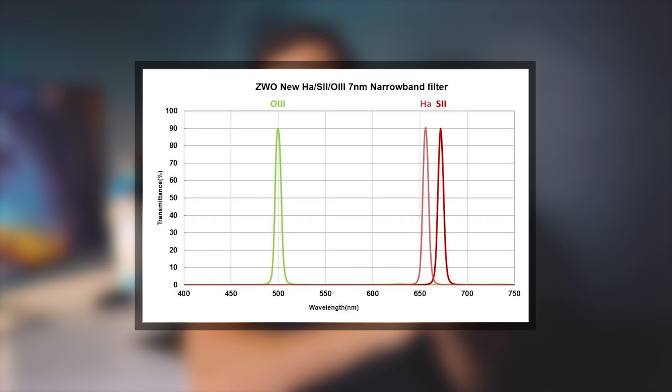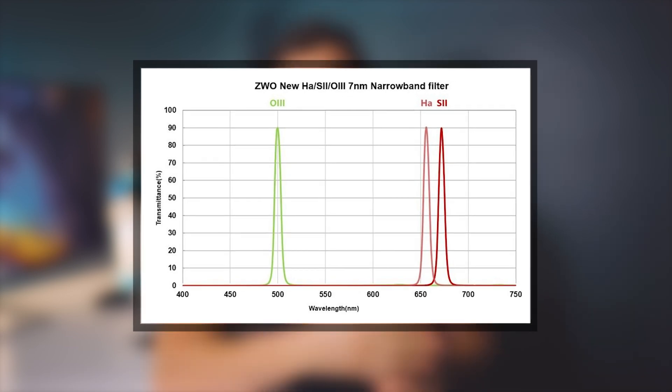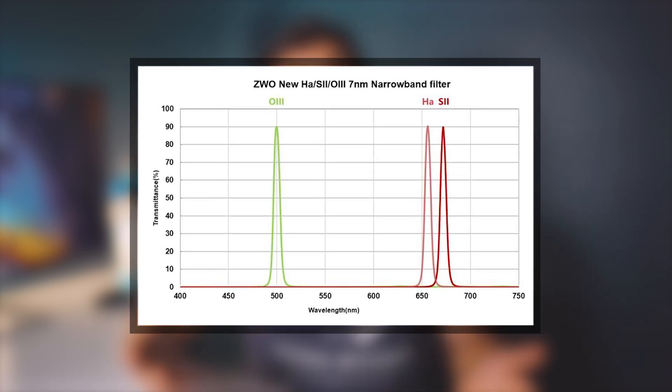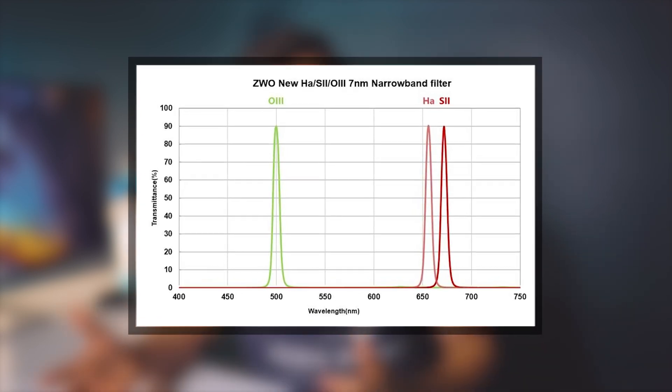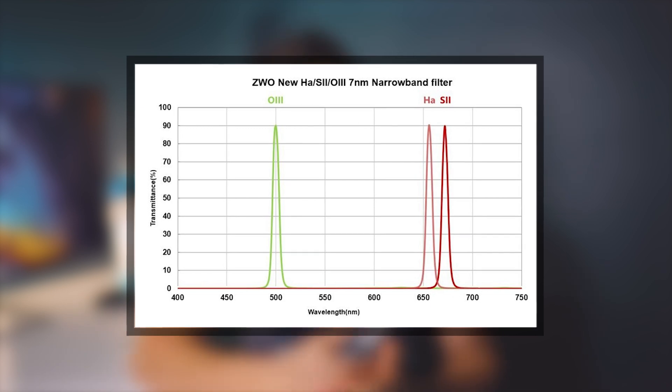Narrowband filters are designed to pass only a very specific wavelength of light which is emitted by excited particles within an emission nebula. These wavelengths of light are referred to as hydrogen alpha, oxygen 3, and sulfur 2. Now generally speaking, the narrower the bandpass of your filter the better the transmittability, but more on this in a moment.